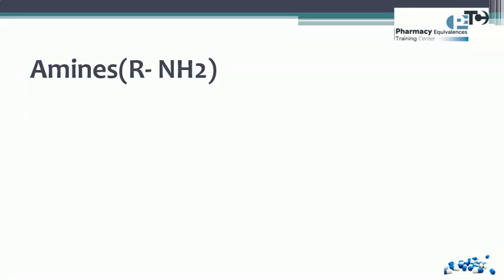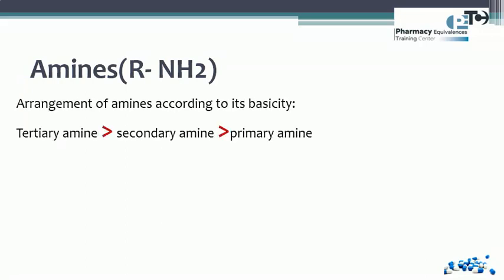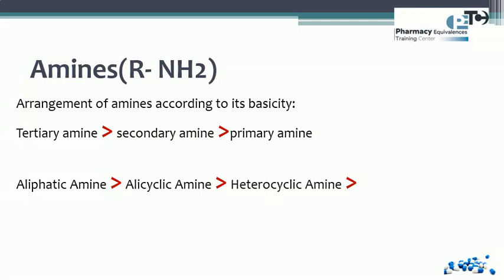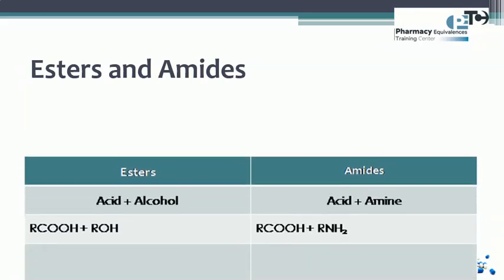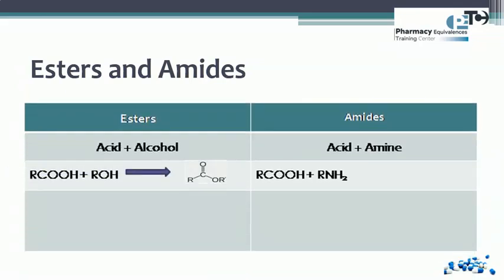Amines are basic in nature, but their basicity is less than inorganic bases like sodium hydroxide, calcium hydroxide, or potassium hydroxide. Among amines, tertiary amines are more basic than secondary, which are more basic than primary. Aliphatic amines are more basic than acyclic, then heterocyclic, and aromatic amines are the least basic. Just as an alcohol reacts with an acid to yield an ester, an amine reacts with a carboxylic acid to yield an amide.